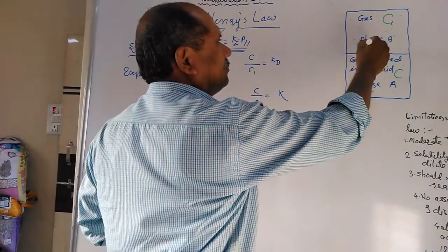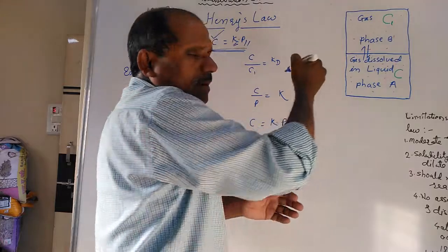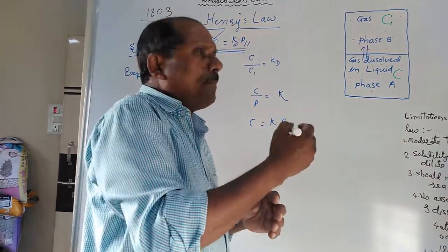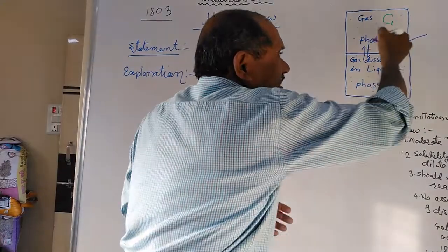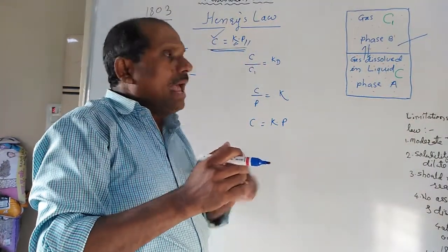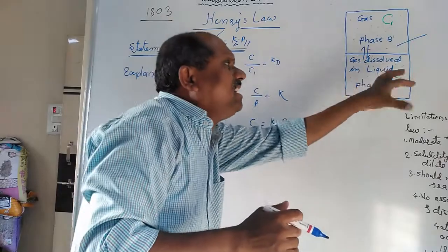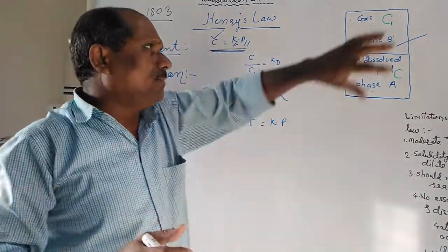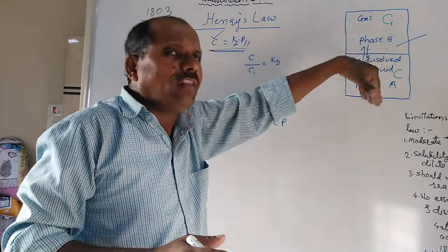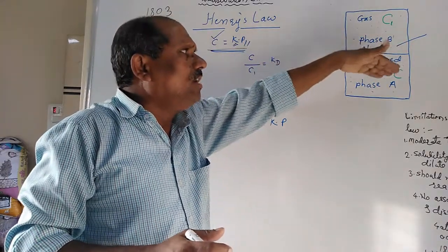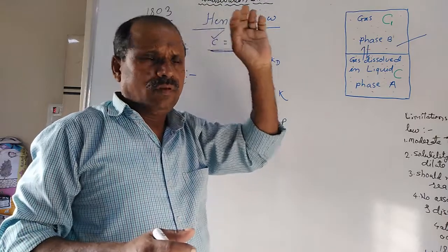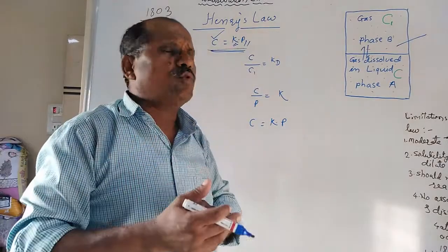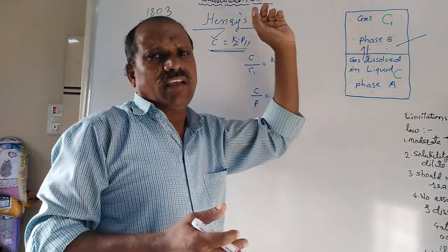After establishing the equilibrium, the pressure of the gas decreases and the concentration of gas in the liquid phase increases. Some of the gas gets distributed or becomes soluble into the liquid phase. This solubility of the gas is directly proportional to the pressure of the gas.